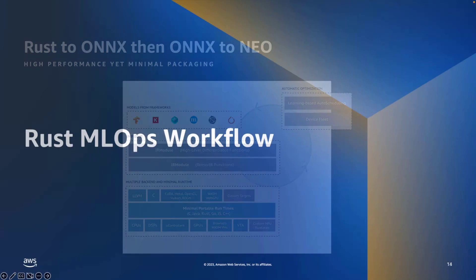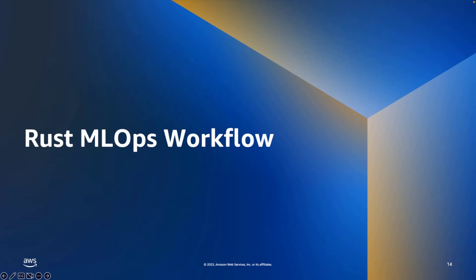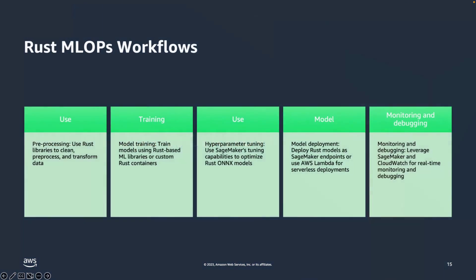Let's talk about the Rust for ML Ops workflow. You want to pre-process things with Rust — you could use libraries like Polars for training. You can combine with the PyTorch bindings and get a great training story. Then you can use an ONNX model, which has great integration with both Rust and SageMaker. Finally, you can deploy it to an endpoint — you could use that endpoint from SageMaker or from Lambda — and you're going to get great monitoring and debugging as well. There's a great story here for Rust for ML Ops with SageMaker.